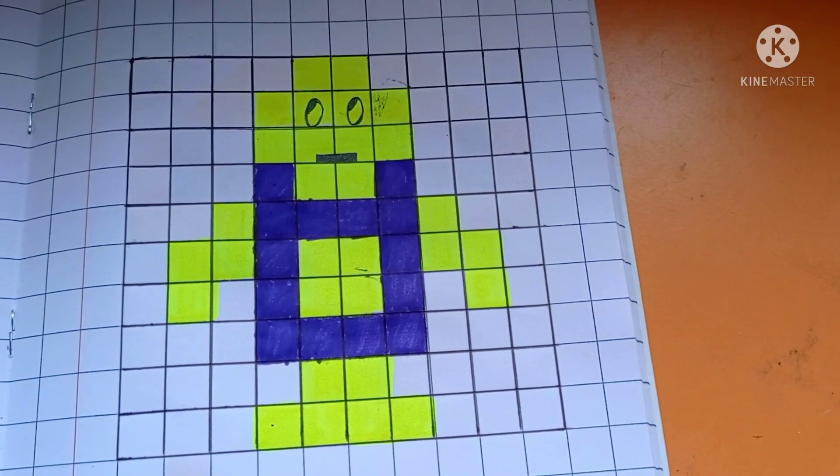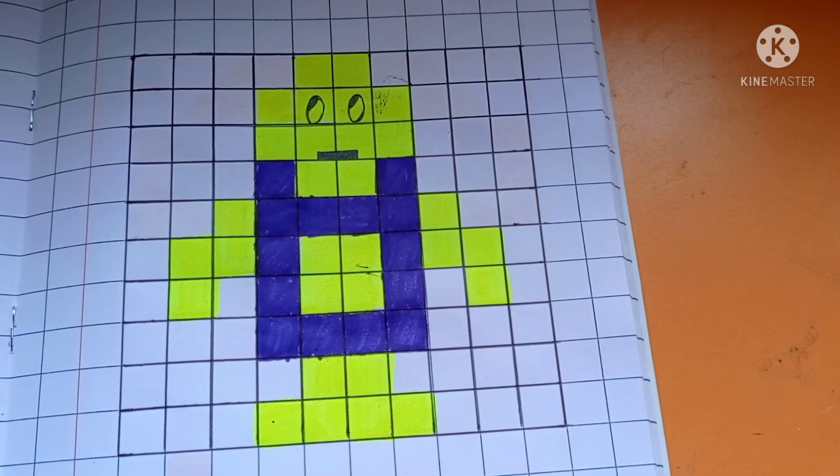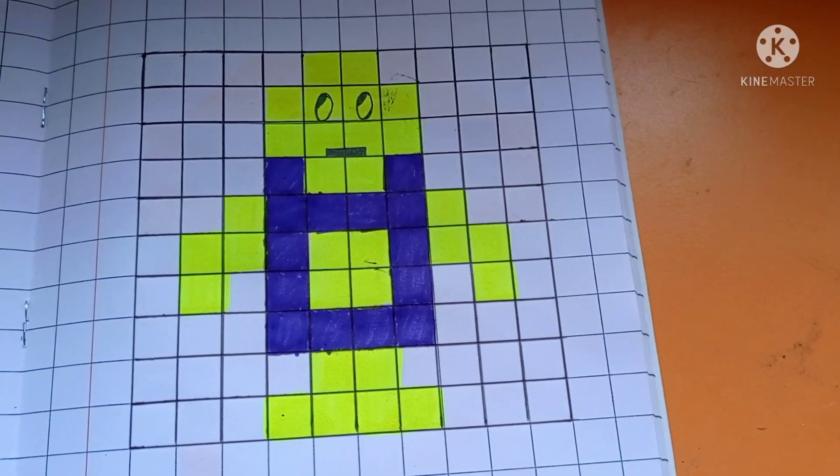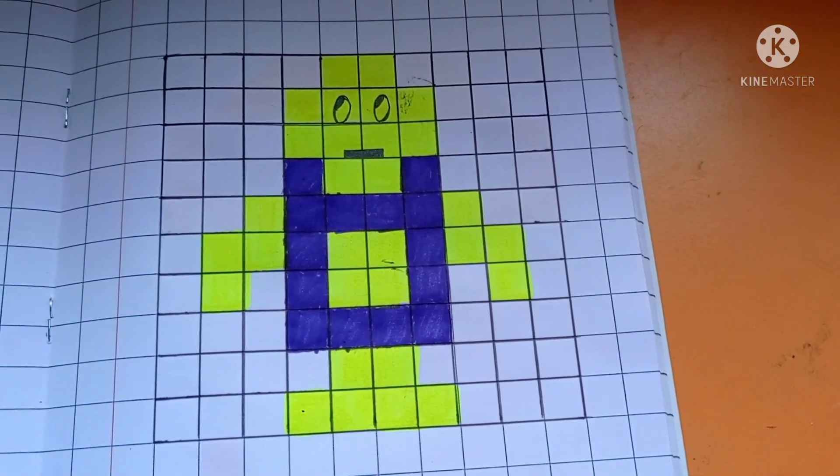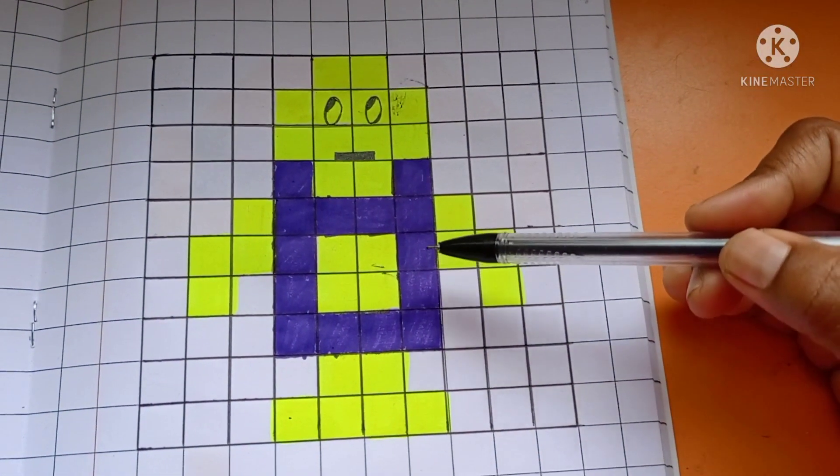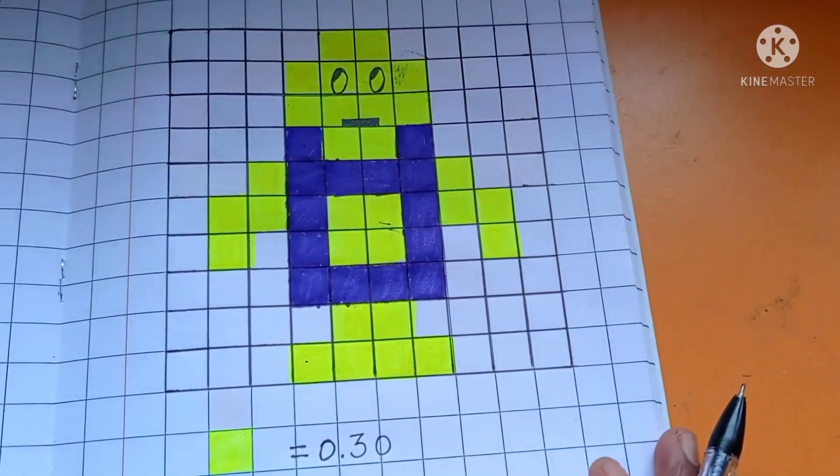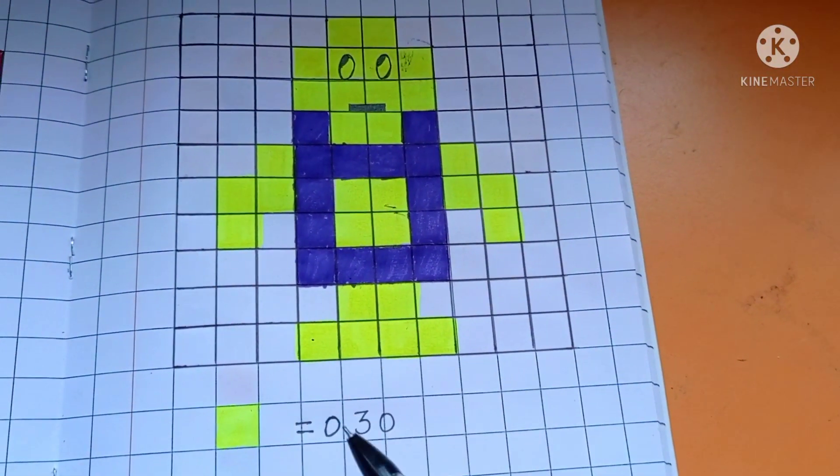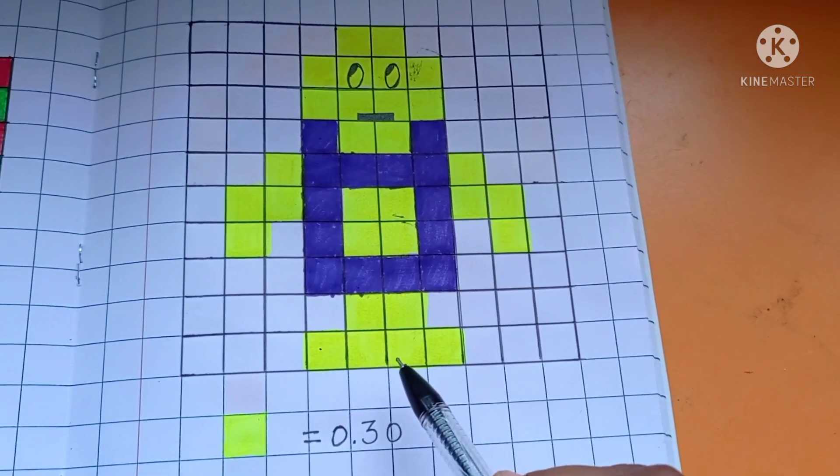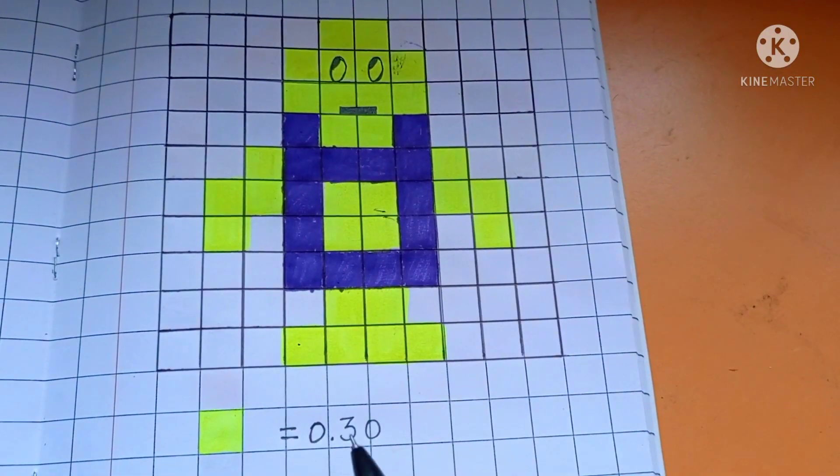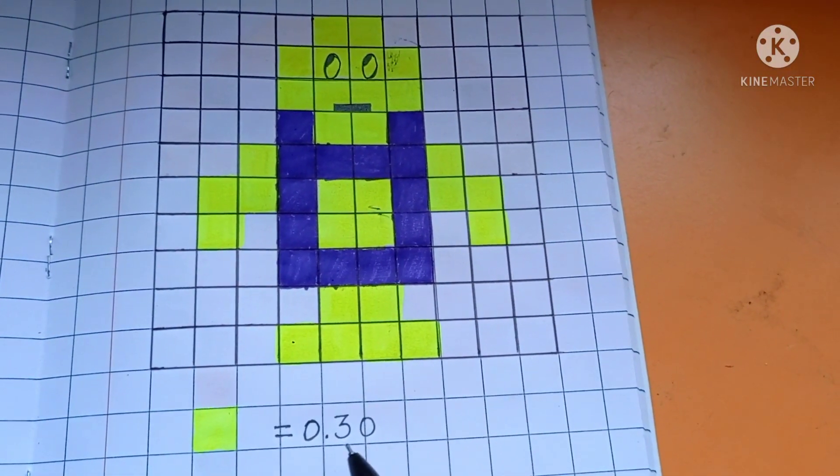We can draw any designs in the grid and we can represent the colors in decimal. So here, green and violet. The number of green colors are 30, 30 squares. How to represent in decimal? 0.30.